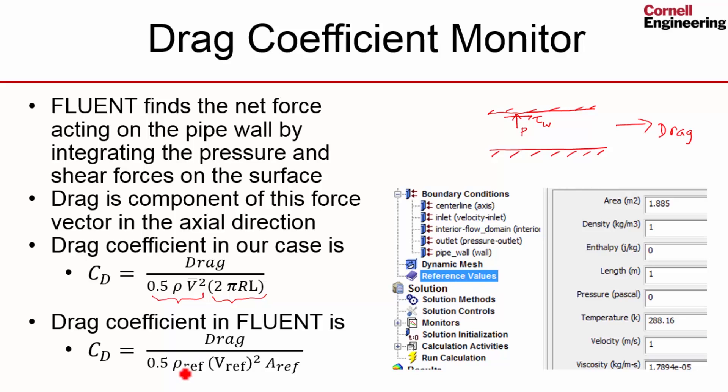So to use the right value of rho, what we need to do is enter that value of rho, which we want used over here, over here. Similarly, the value of velocity that we want Fluent to use over here, or equivalently here, we enter over here. And the area, which is the area reference, we enter over here. And in this case, that is 2 pi r L.